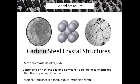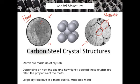The first thing to get your head around is that metals are made up of crystals. Depending on the size and how tightly packed these crystals are, it alters the properties of the metal. The metal on the left has very small and tightly packed crystals — this would be quite a hard metal. On this side, the crystals are really quite big, and this would be a more malleable metal.